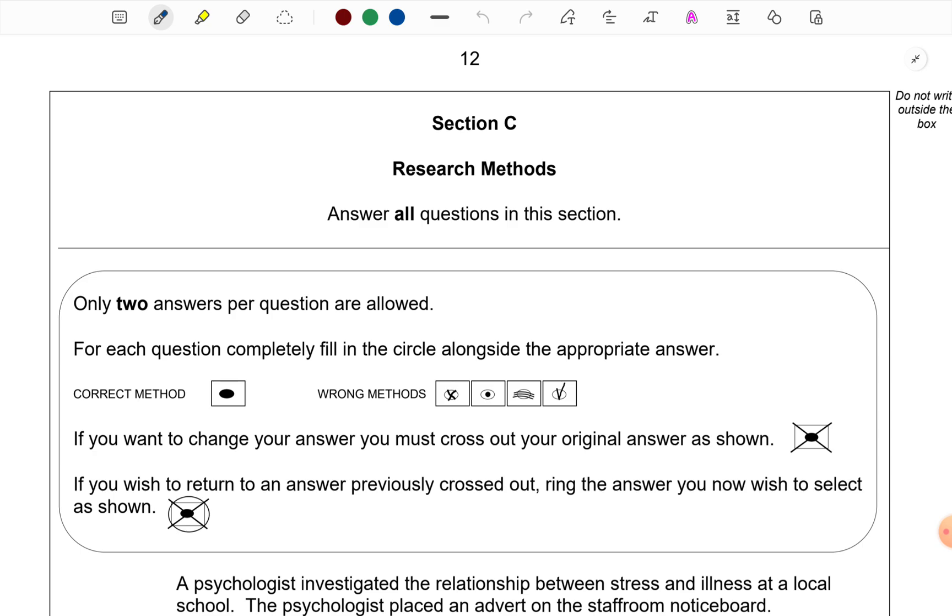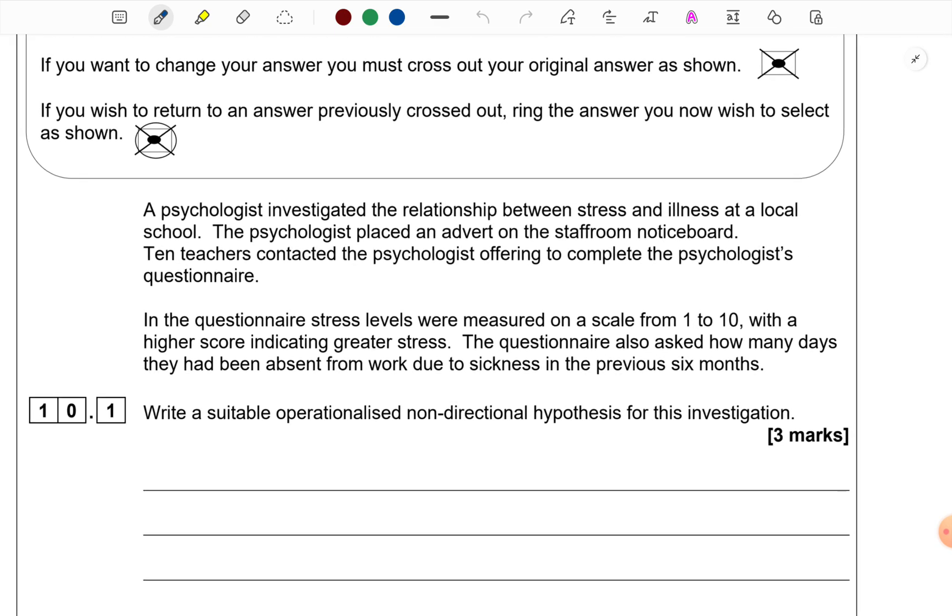Okay, let us begin. Here in section C, we have a scenario given to us. First, I will just read out the scenario. A psychologist investigated the relationship between stress and illness at a local school. The psychologist placed an advert on the staff room notice board. Ten teachers contacted the psychologist offering to complete the psychologist's questionnaire. In the questionnaire, stress levels were measured on a scale from 1 to 10 with a higher score indicating greater stress. The questionnaire also asked how many days they had been absent from work due to sickness in the previous six months.